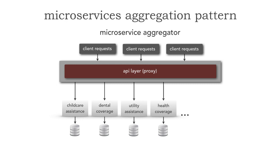Anybody can apply for these kinds of benefits, and this works well with microservices because each benefit — child care, dental, utility, health — all of these are separate and independent of each other.